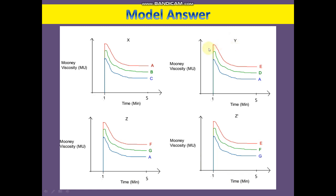In the plot, compound A, which contains no carbon black, shows the lowest Mooney viscosity. Compound D contains 30 phr of carbon black and shows somewhat higher viscosity compared to A. Compound E contains 60 phr of carbon black — the highest amount — and shows the highest Mooney viscosity value. This effect is also reflected in the initial torque of the Mooney viscosity curves in the same way.